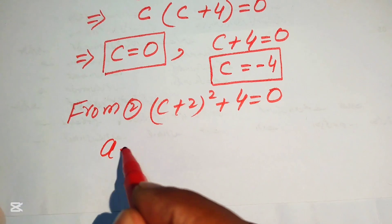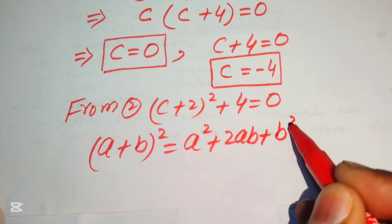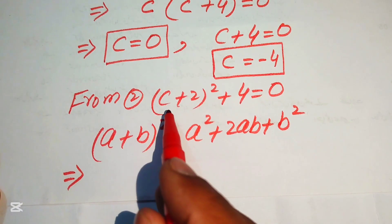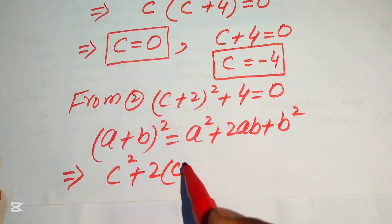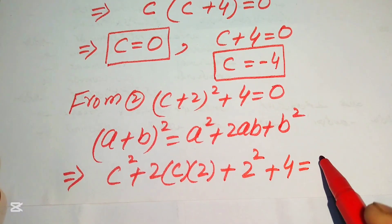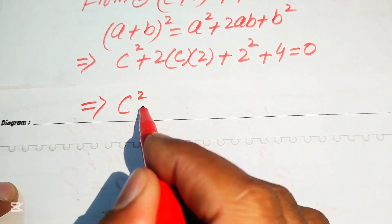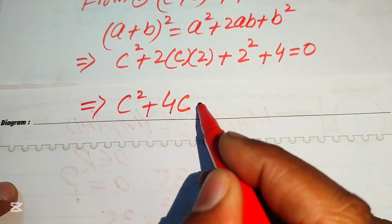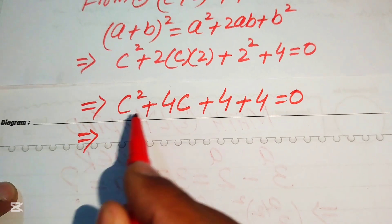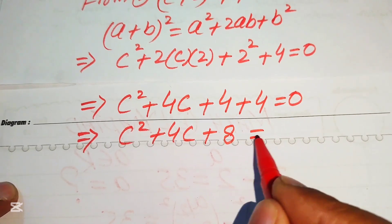We apply the expansion formula (A + B)² = A² + 2AB + B². With A = C and B = 2, the equation expands to C² + 2(C)(2) + 2² + 4 = 0, which simplifies to C² + 4C + 4 + 4 = 0, giving us C² + 4C + 8 = 0.